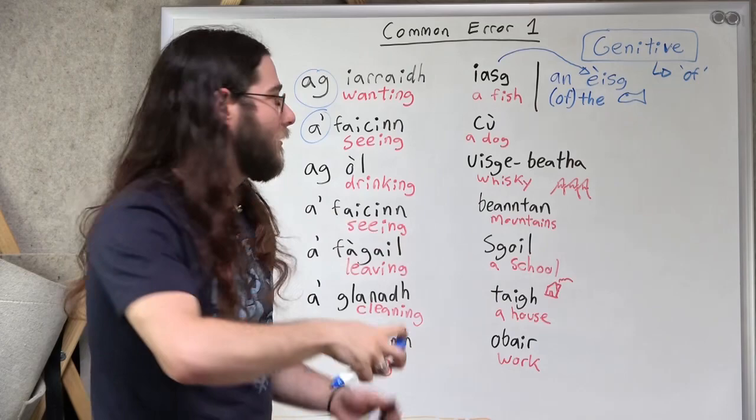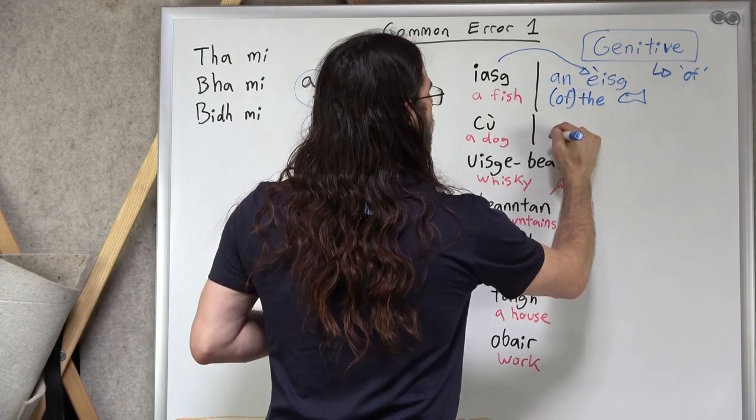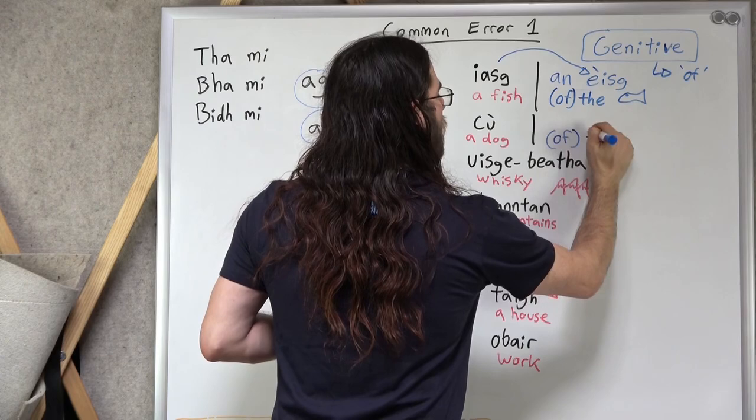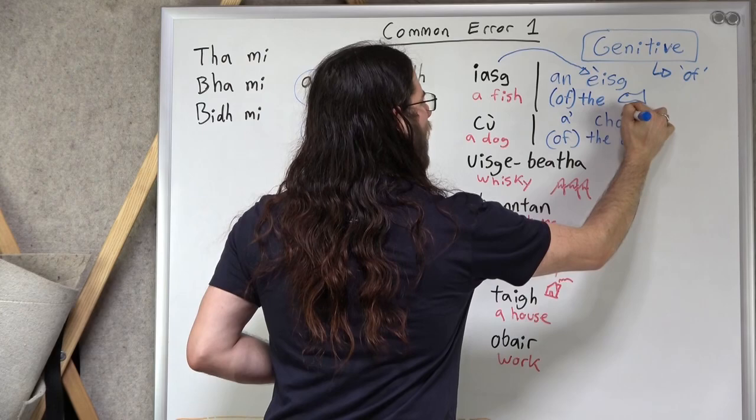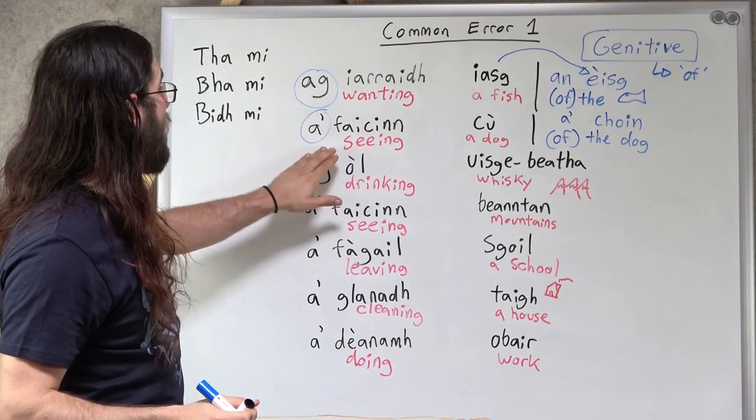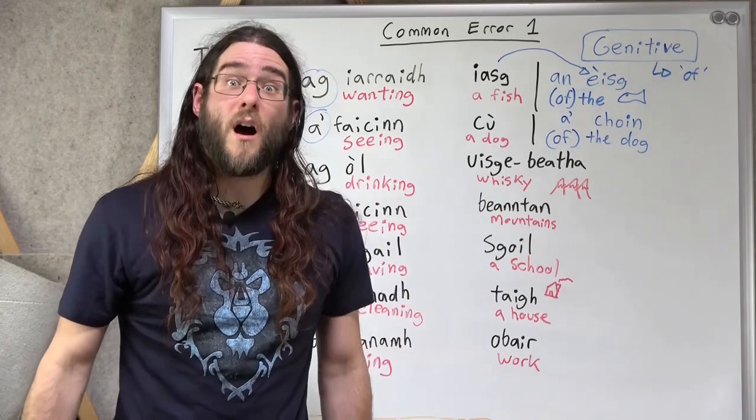So, we're going to say, of the dog. I'm seeing of the dog. So, this becomes a' choin. A' choin. Tha mi a' faicinn a' choin. Tha mi a' faicinn a' choin.